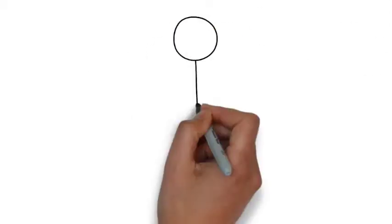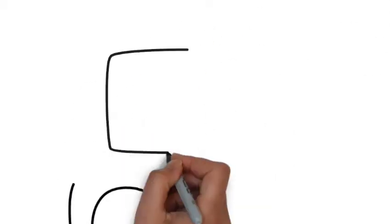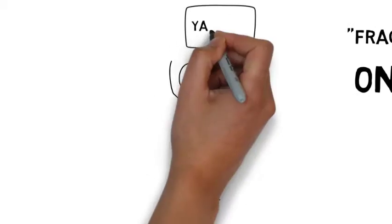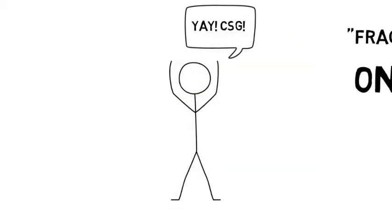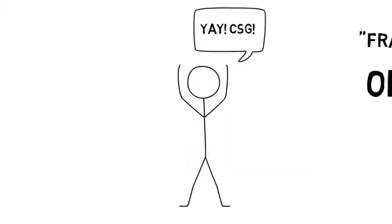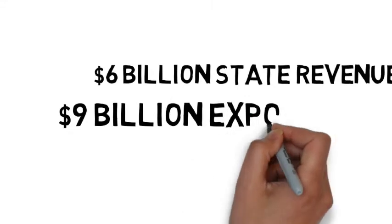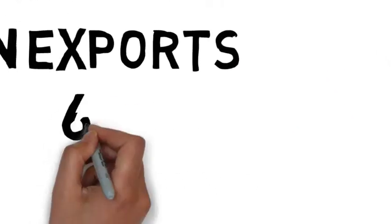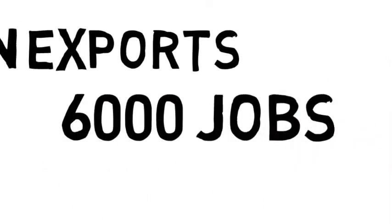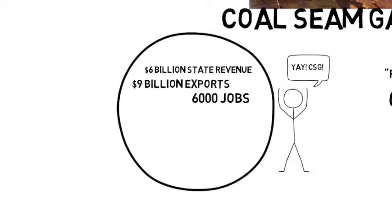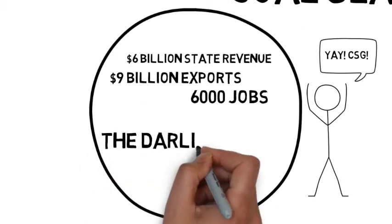So this is all positive, right? Less emissions, power needs still being satisfied. And according to research conducted, coal seam gas wells in the Darling Downs are anticipated to deliver $6 billion in state revenue for Queensland, $9 billion in exports over the next 25 years, and is expected to create over 6,000 jobs. And that's just in the Darling Downs.